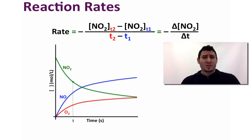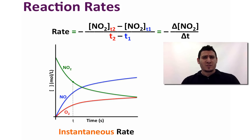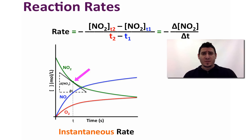The value of the reaction rate at a certain time is called the instantaneous rate. To calculate the instantaneous rate, we can simply calculate the slope of a tangent line to the curve at the corresponding time, and therefore the slope of this line will be equal to the reaction rate.